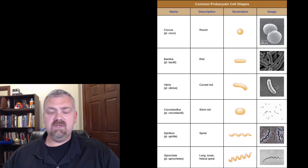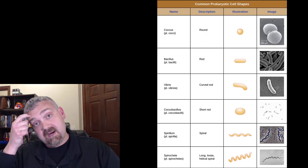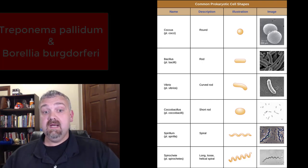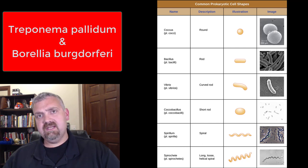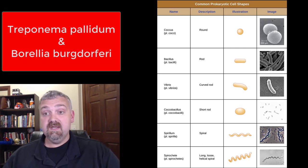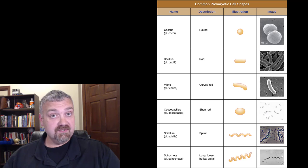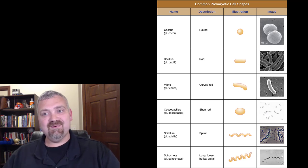And then clinically, the spirochetes are a lot more important. The two key spirochetes that I can think of here would be Treponema pallidum, which is the causative agent of syphilis, and Borrelia burgdorferi, which is the causative agent of Lyme disease. And there are other ones. All right, so those are the basic cell shapes.